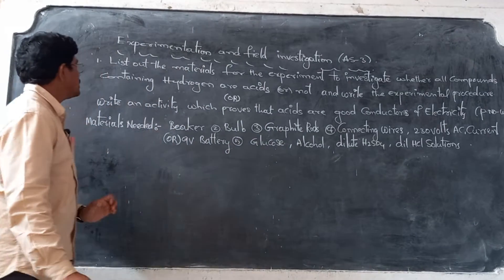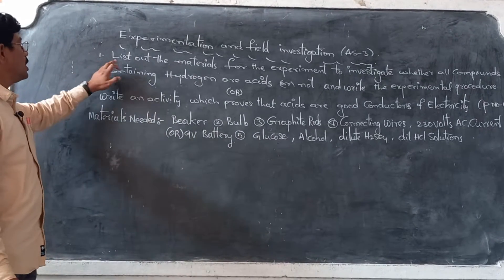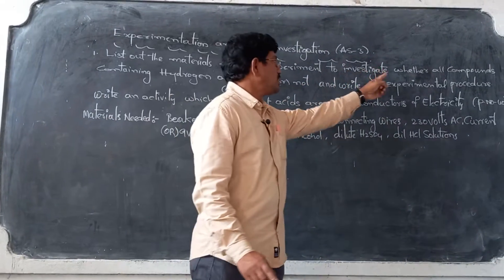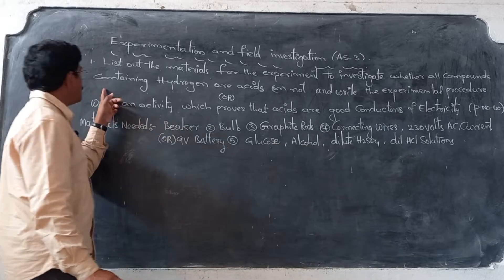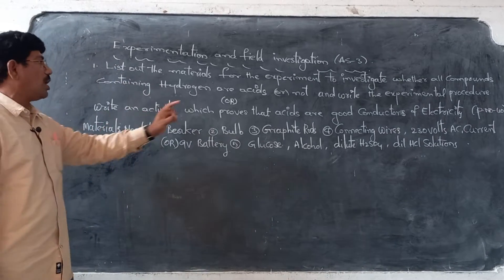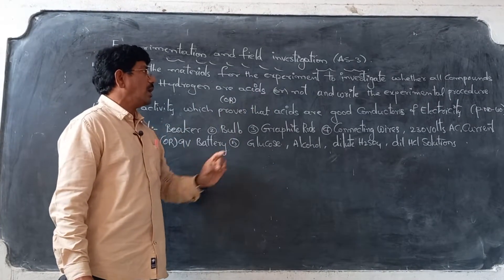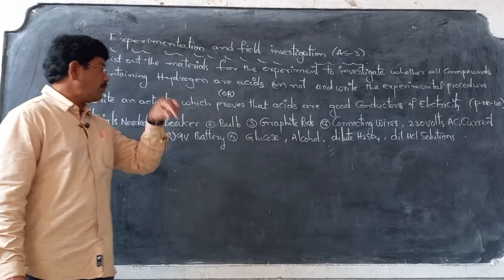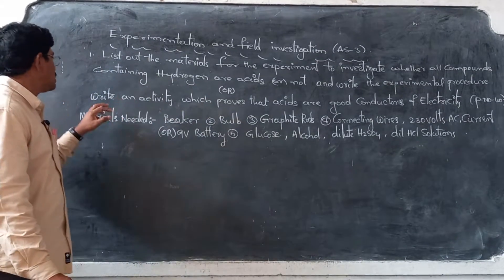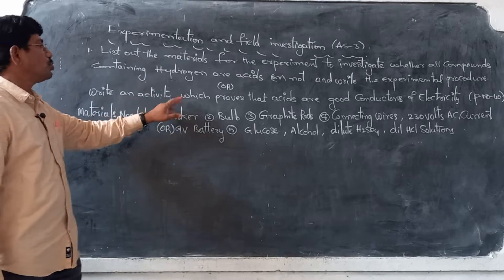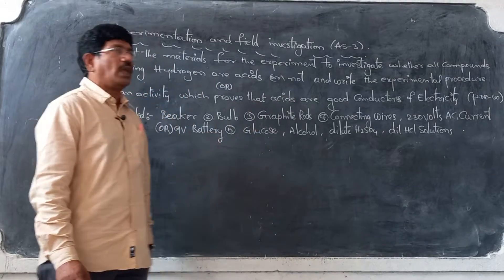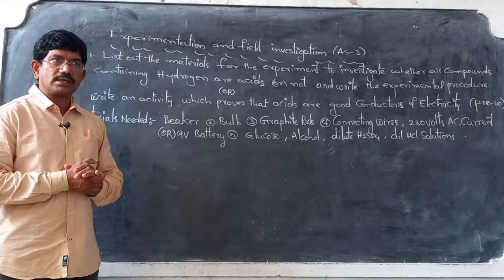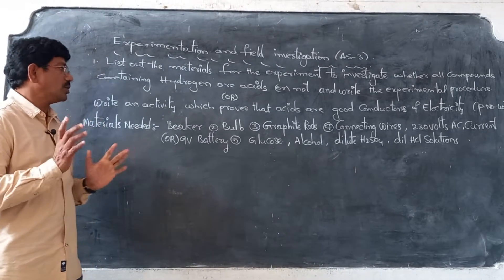This question is given several times in the annual examination: list out the materials for the experiment to investigate whether all compounds containing hydrogen are acids or not, and write the experimental procedure. The same question is also asked as: write an activity which proves that acids are good conductors of electricity.